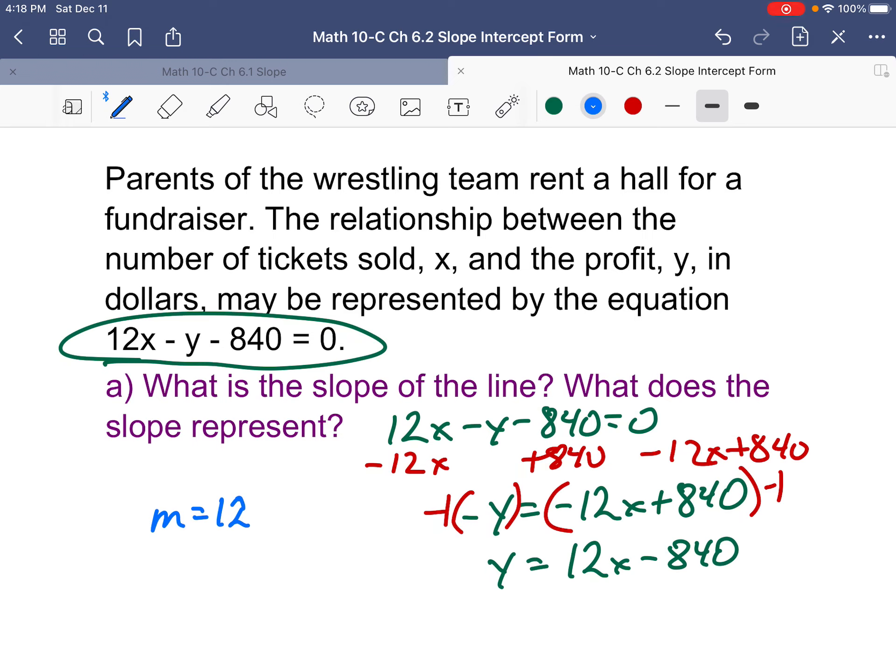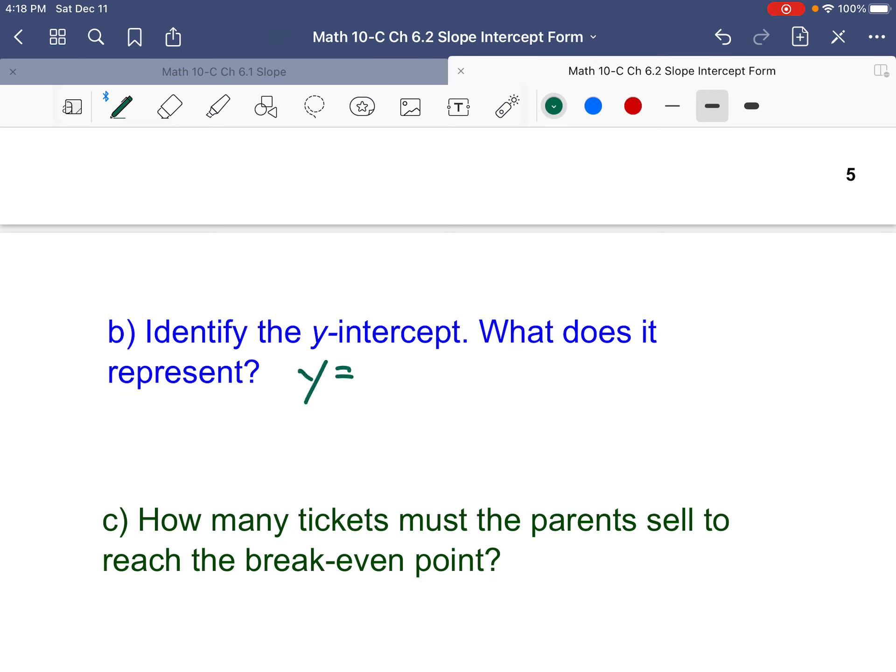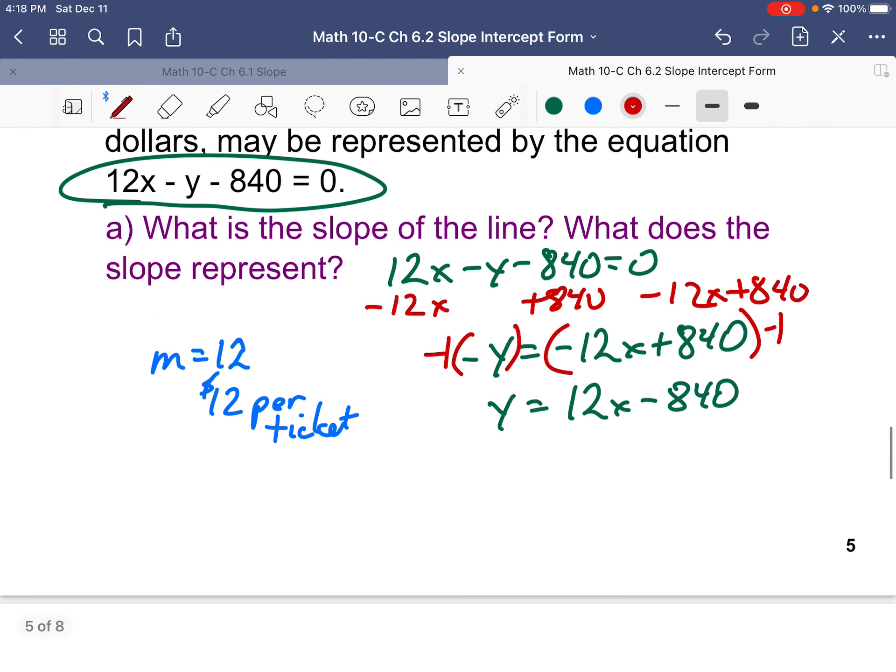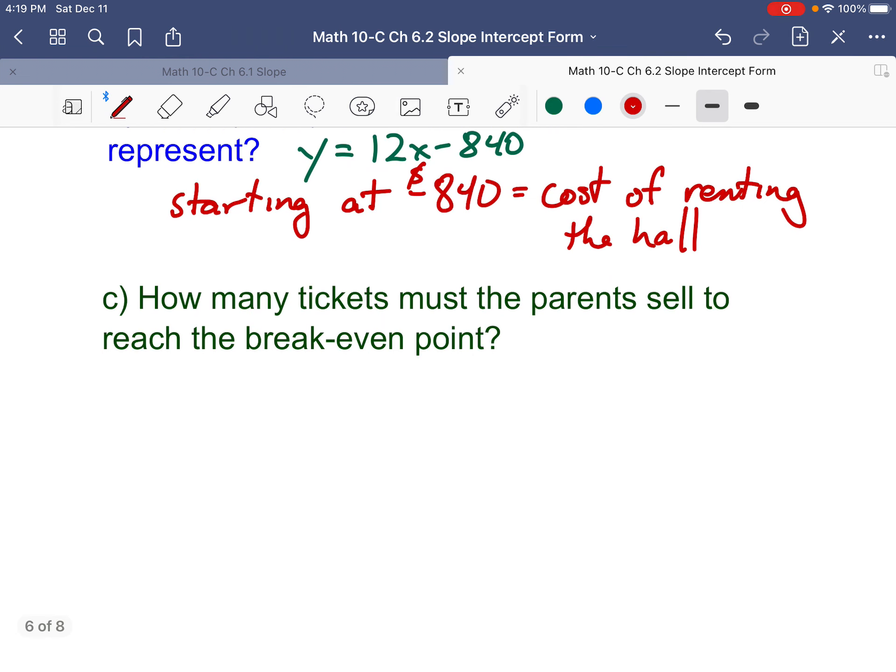So then the equation becomes minus y equals minus 12x plus 840. Now, we're almost there. It's minus y. We've got to go to minus 1. How do we do that? Multiply everything by minus 1. Then that's y equals 12x minus 840 dollars. And here I want to point out the slope is 12. Now what does that mean? Well, we're dealing tickets sold and money. That's probably 12 dollars per ticket. Now 12 dollars per ticket. That makes sense. Identify the y-intercept. What does it represent? Well, we just had the equation here. Y equals 12x minus 840. So we're starting at minus 840 dollars, which is probably the cost of renting the hall.